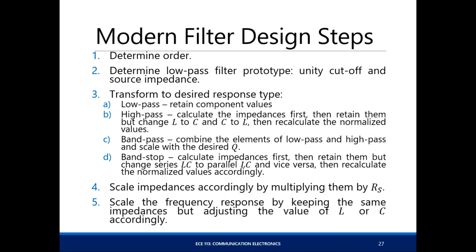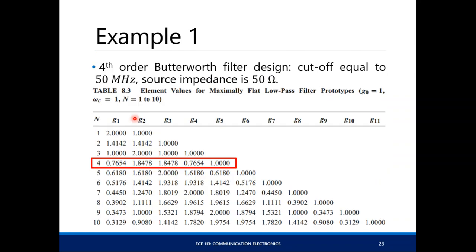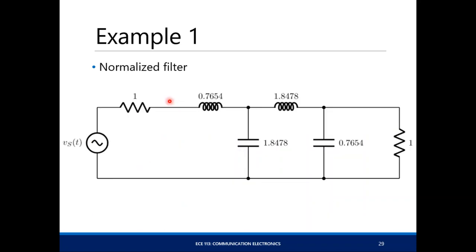The modern filter design steps are summarized in slide number 27 — you can go back to that slide when you need any clarification or guidance. Let's have an example: a fourth-order Butterworth filter with cutoff equal to 50 MHz and source impedance of 50 ohms. The fourth-order Butterworth filter has specific values for its elements; you need to draw the normalized low-pass filter prototype.